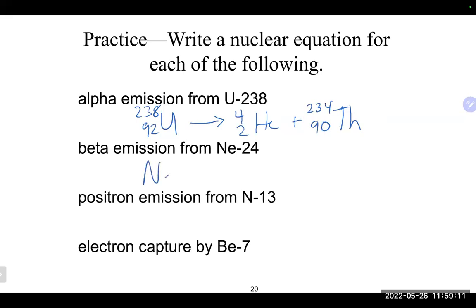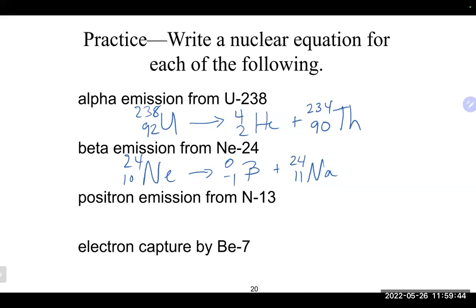For neon-24, the mass number is 24 and the atomic number is 10. For beta emission, the beta particle (with -1 subscript) goes on the product side—you can use the beta symbol or the letter E. Since the beta has -1, we add one to get atomic number 11, which is sodium. The mass number stays at 24: 24 on the left plus 0 on the right equals 24.